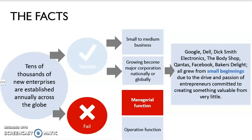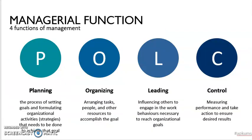So this topic explains management functions in more detail. There are four management functions. First, planning — planning is the process of setting goals and deciding what strategies are needed to achieve the goals of the company. Second, organizing — to arrange the resources, the people, and the tasks to achieve the goal of the company. Next, leading — to influence and motivate the workers to work harder to achieve the goal of the company. And last, controlling — measuring the performance of every individual and department to ensure that they are doing the right thing.